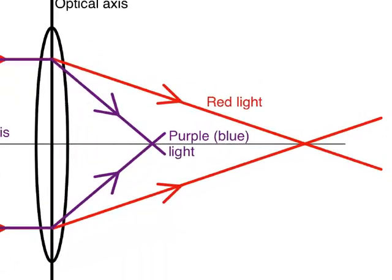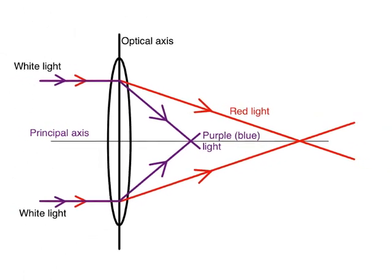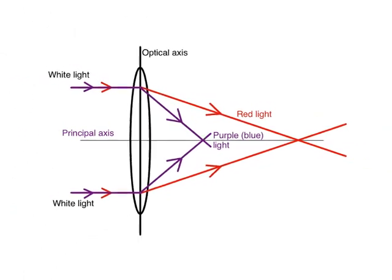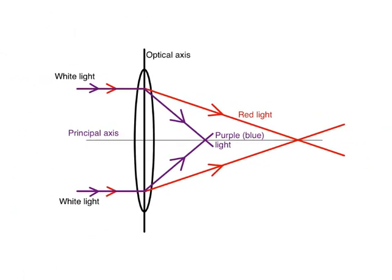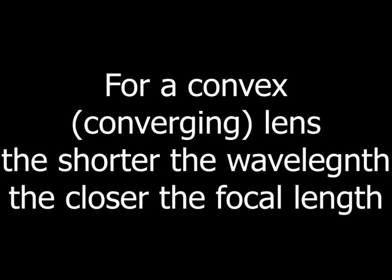Finally, we make sure that arrows have been used to indicate the direction of the light and that the diagram is correctly labeled. In summary, chromatic aberration occurs due to refraction, and for a converging lens, the shorter the wavelength, the closer the focal point is to the lens.